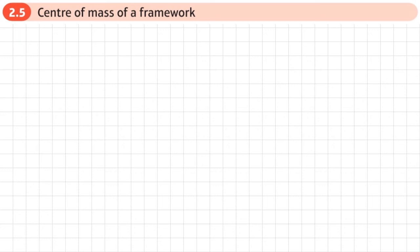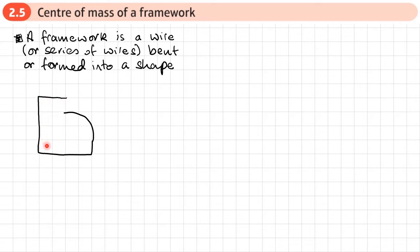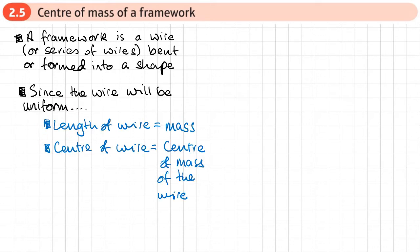This is the fifth section of chapter two on centers of mass of plane figures, and here we're going to be looking at finding the center of mass of a framework. A framework is a wire or a series of wires bent or formed into a shape. Since we're dealing with uniform wire, we're going to take the length of the wire as its mass when we do the sum of mx over the sum of m — so m here represents the length of each piece of wire.